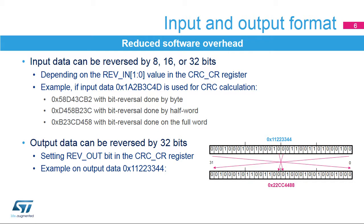For example, input data 0x1a2b3c4d is used for CRC calculation as 0x58d43cb2 with bit reversal done by byte, 0xd458b23c with bit reversal done by half-word, and 0xb23cd458 with bit reversal done on the full word. The output data can also be reversed by setting the rev-out bit in the CRC-CR register. The operation is done at bit level.